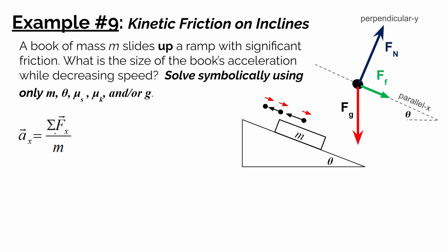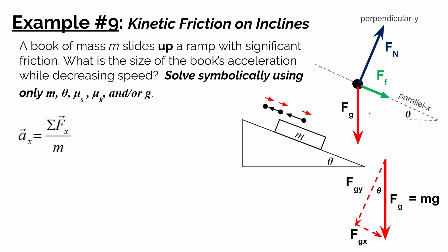We need to consider forces or components of forces in the x direction. From the force diagram, friction is in the positive x direction. Gravity acts in both x and y, so we must split it into components. The actual force of gravity is the hypotenuse of a right triangle, with the x and y components as the other sides — fgx represents how much gravity pulls in the x direction, and fgy represents the component in the rotated y direction.